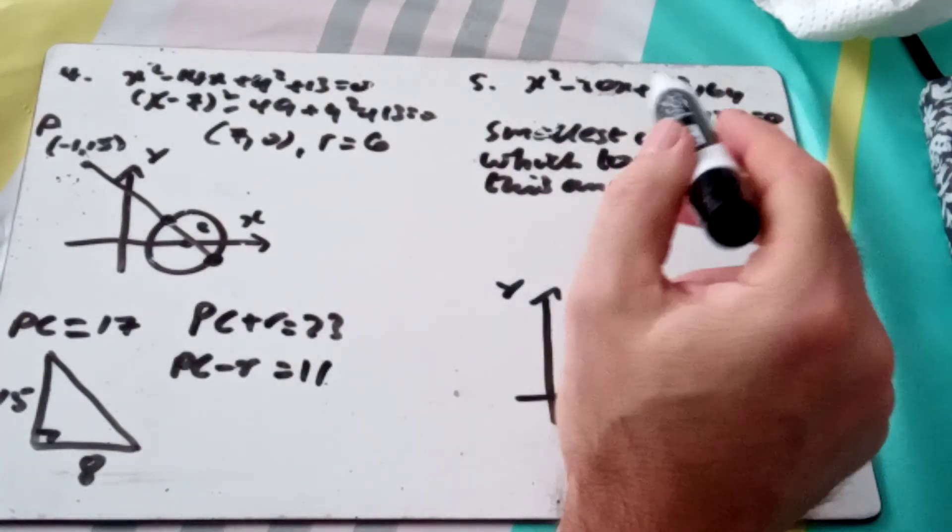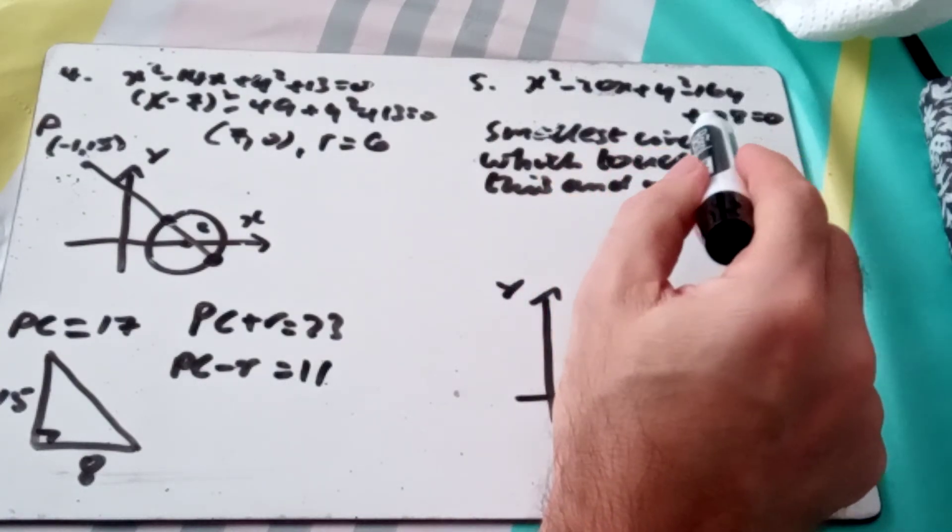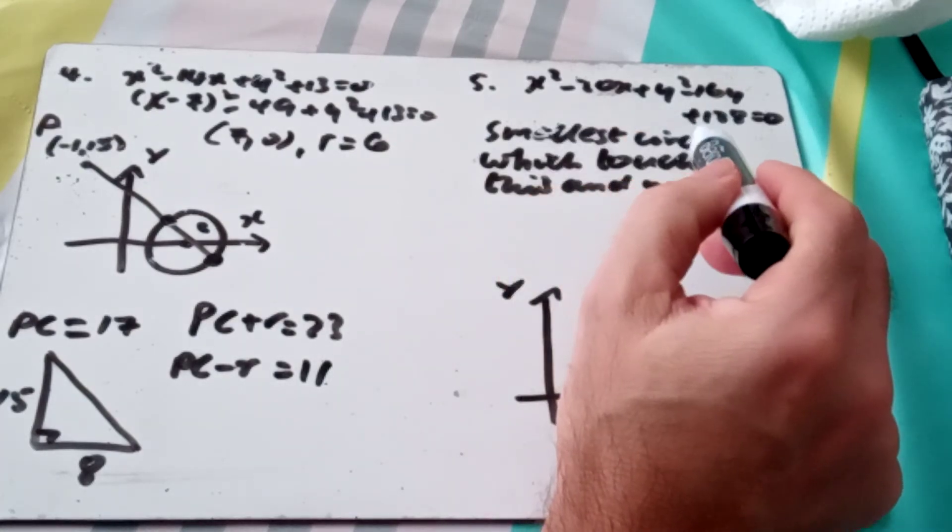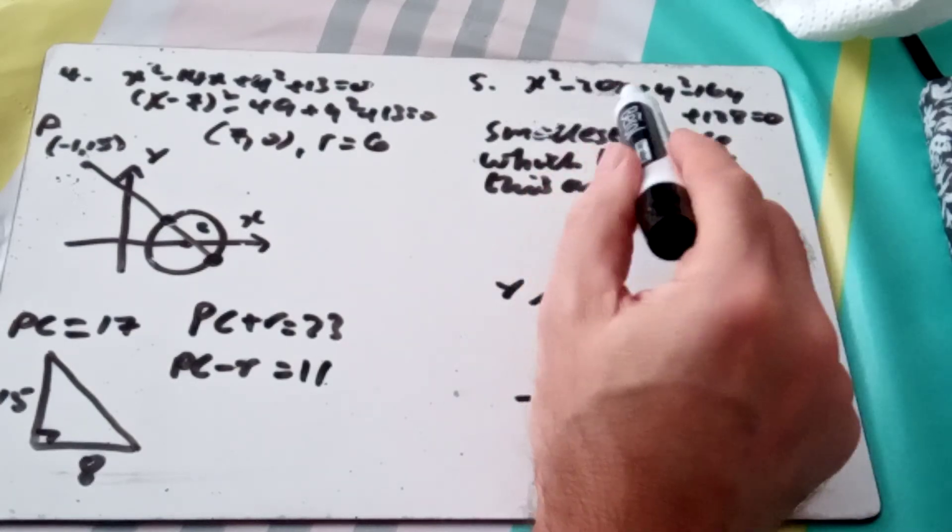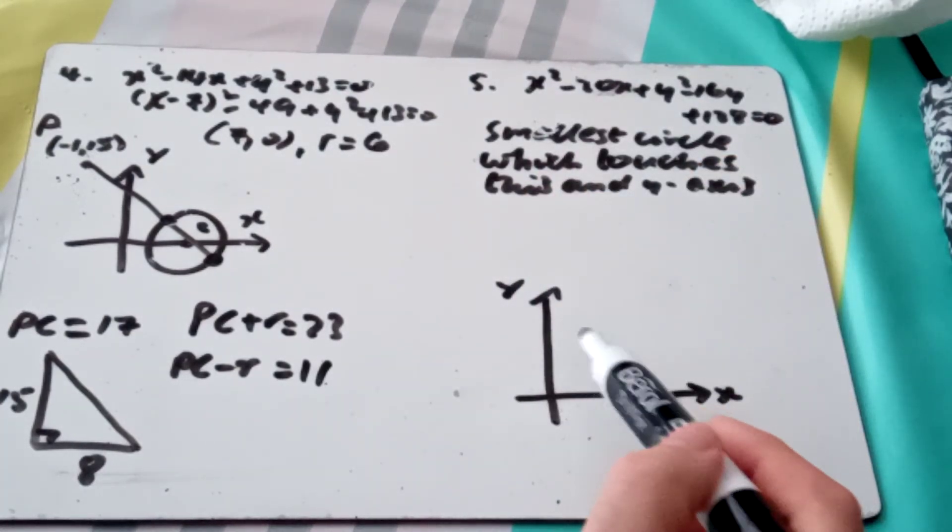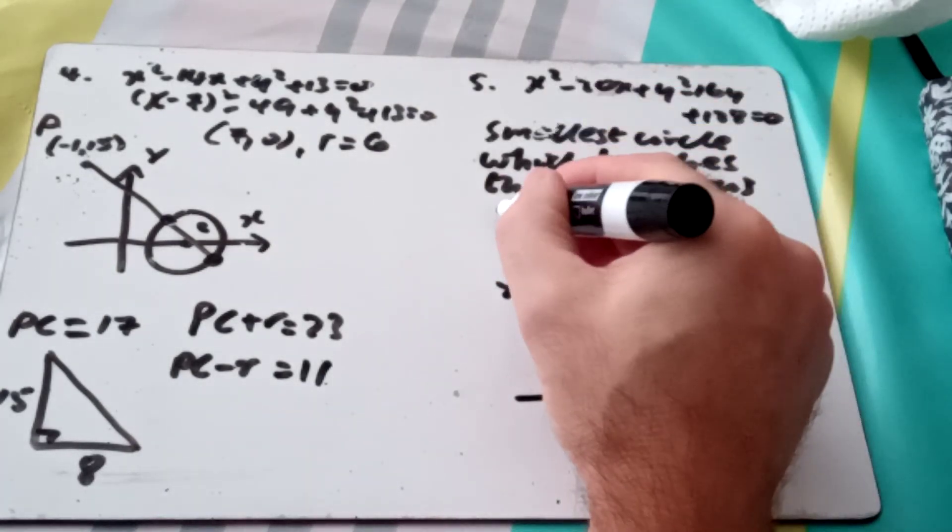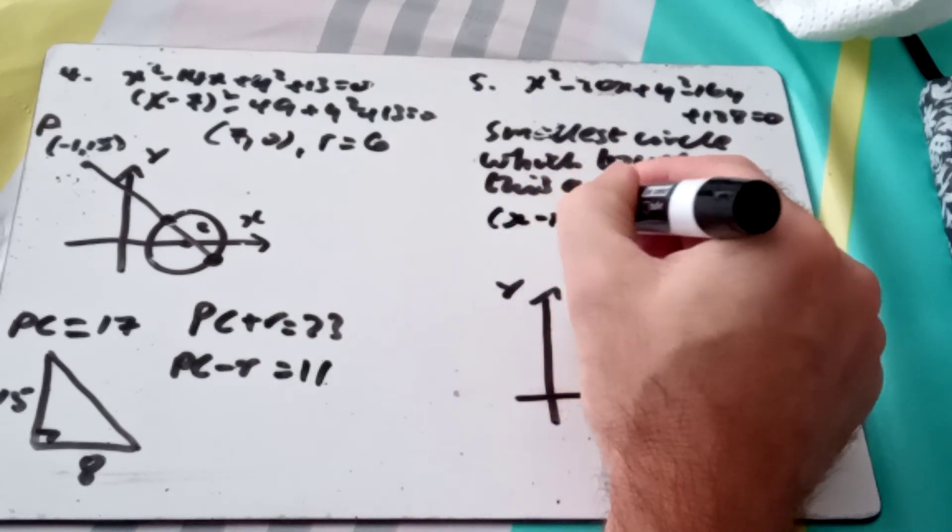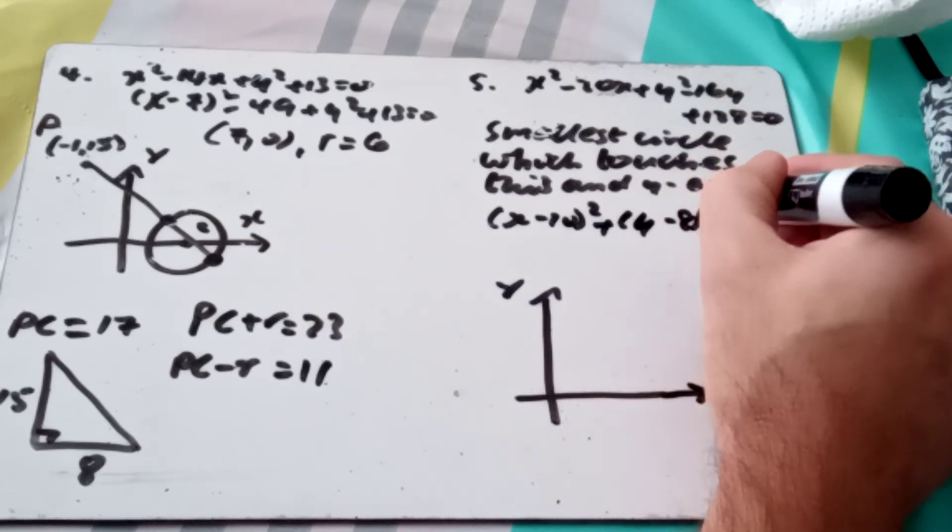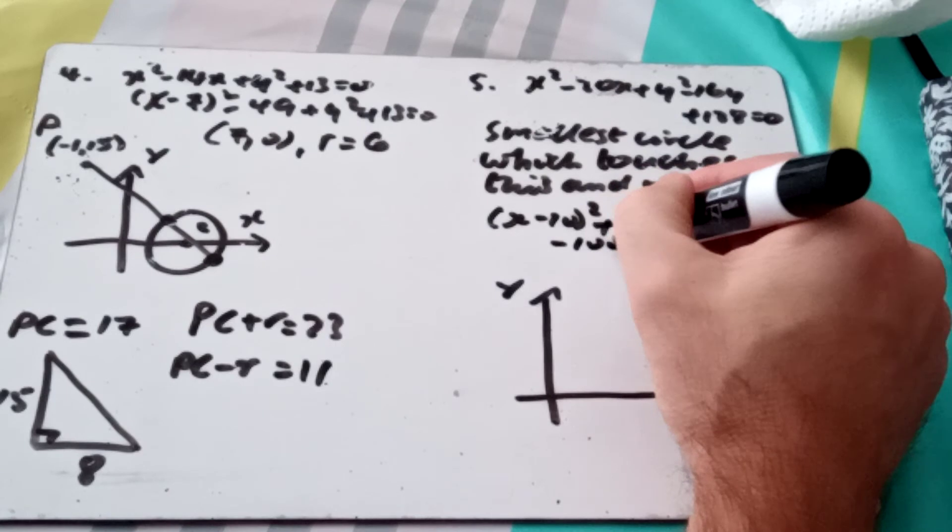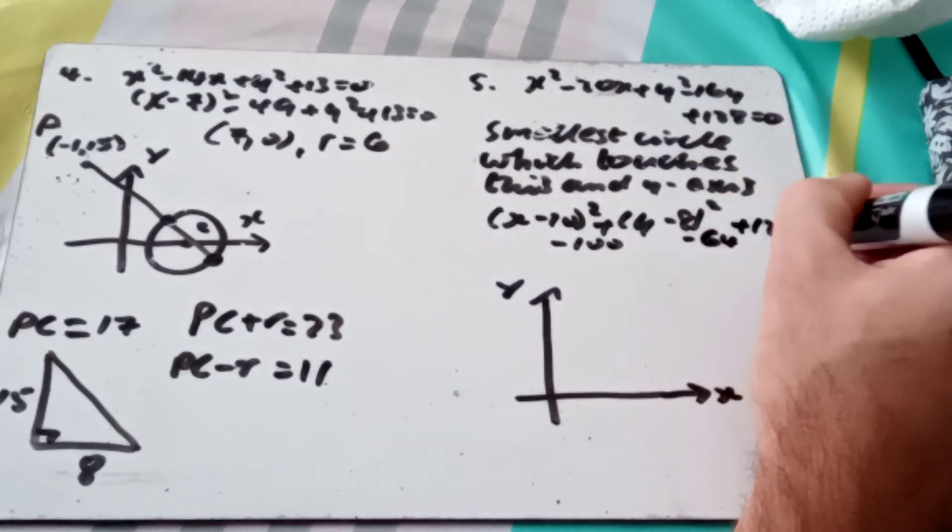And last one, we've got an equation of a circle, x² - 20x + y² - 16y + 128 = 0. We want to draw the smallest circle which touches this big one and the y-axis. So I'll need to sort it out first, do a sketch of it, and then use that sketch to help me draw this little circle, and then go on and answer the question. So I've got (x - 10)² plus (y - 8)². Oh no, I forgot my... So I'm getting rusty, -100, -64, and +128 = 0.